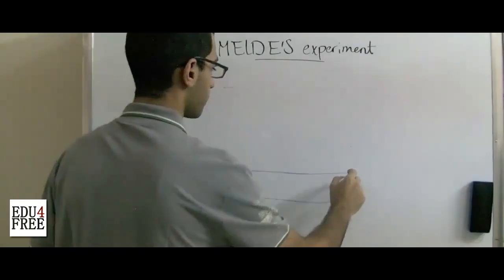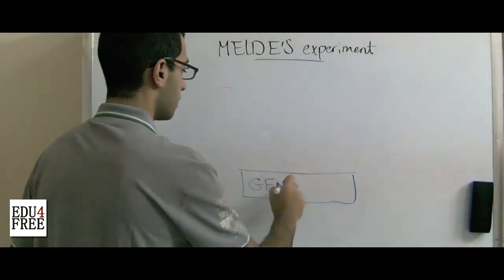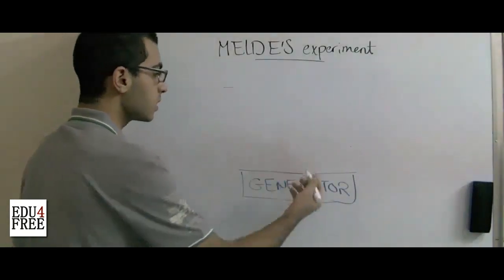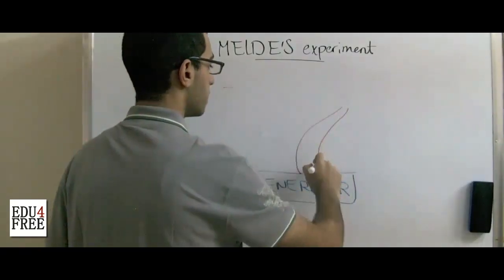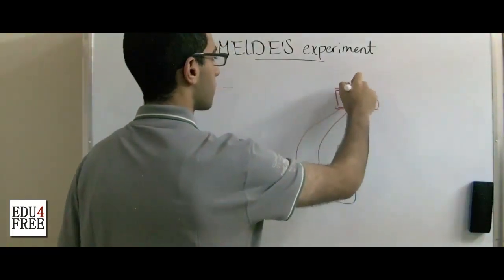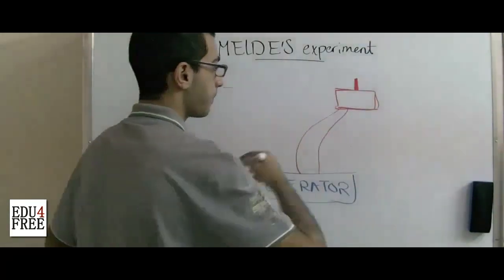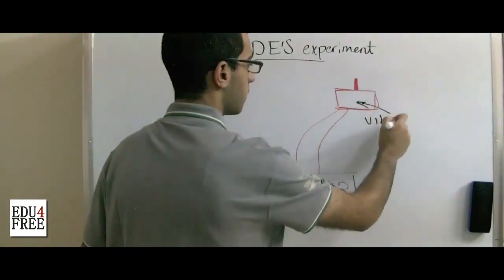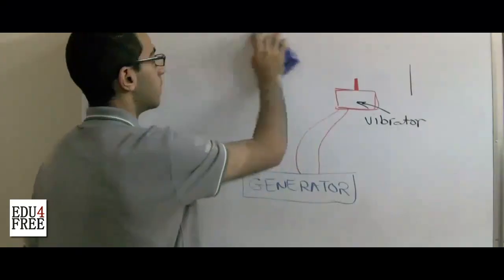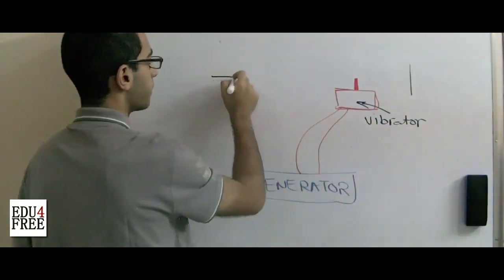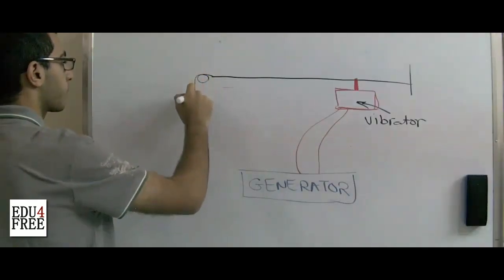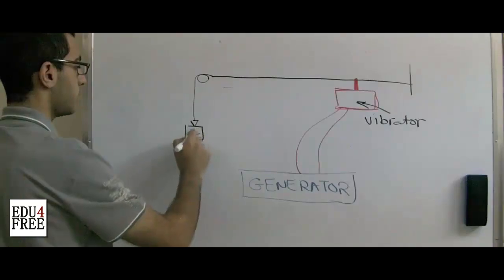There was a generator, and this generator generates electricity so that it's connected to a vibrator. And there is a rope here, and there is a weight.